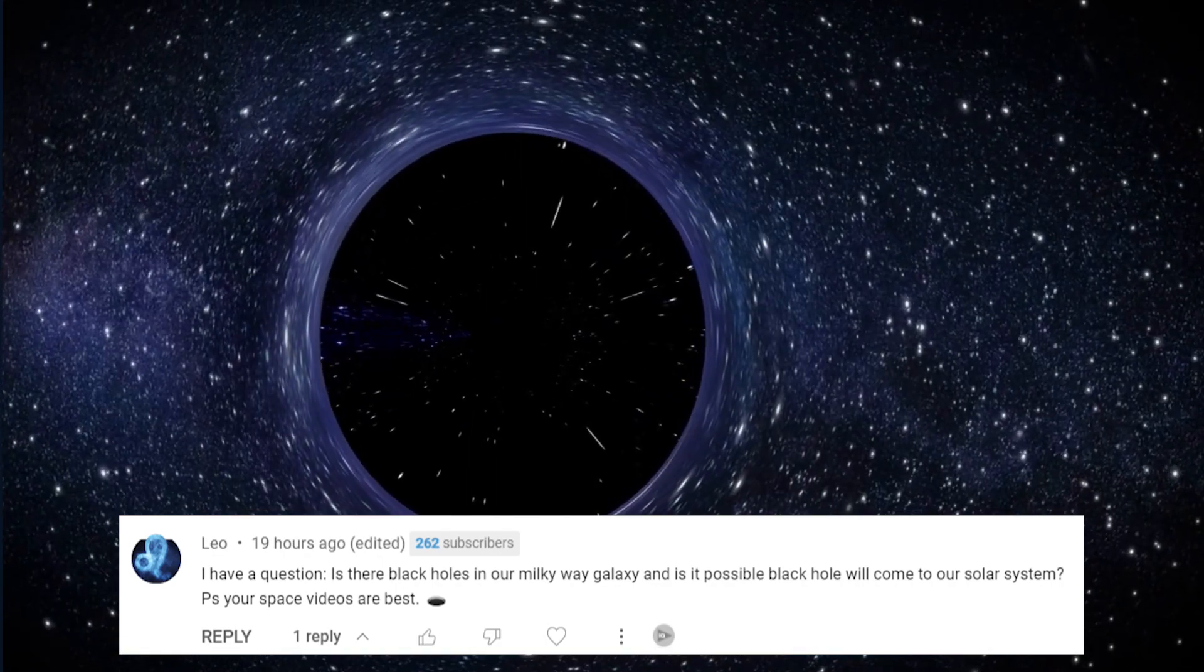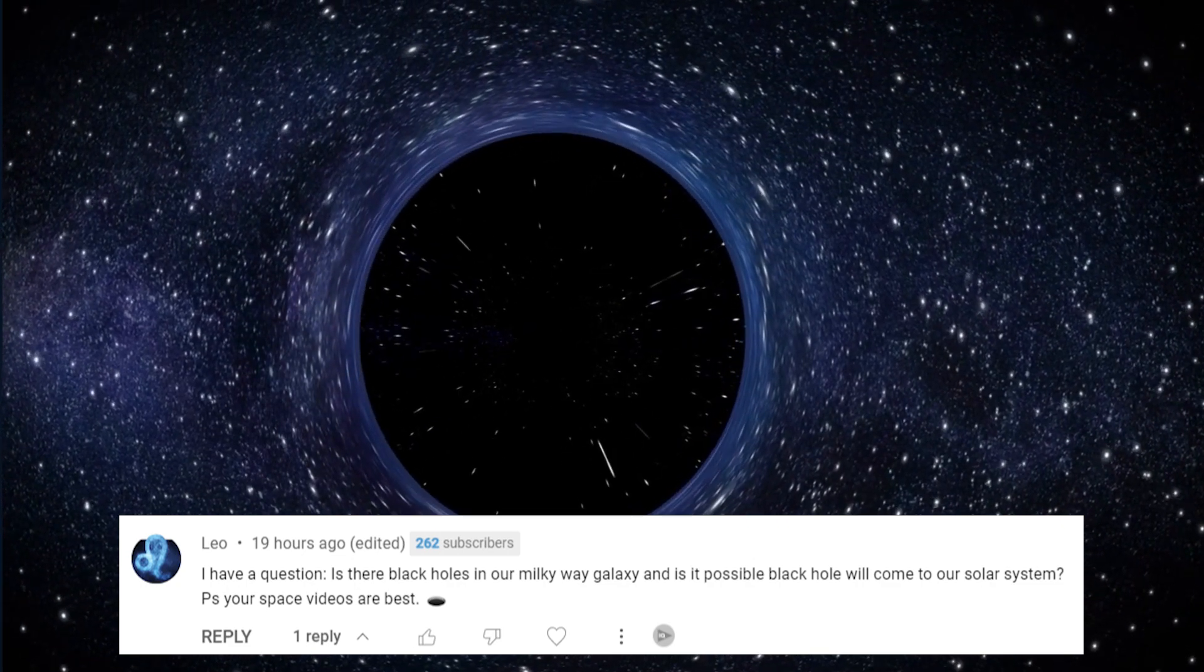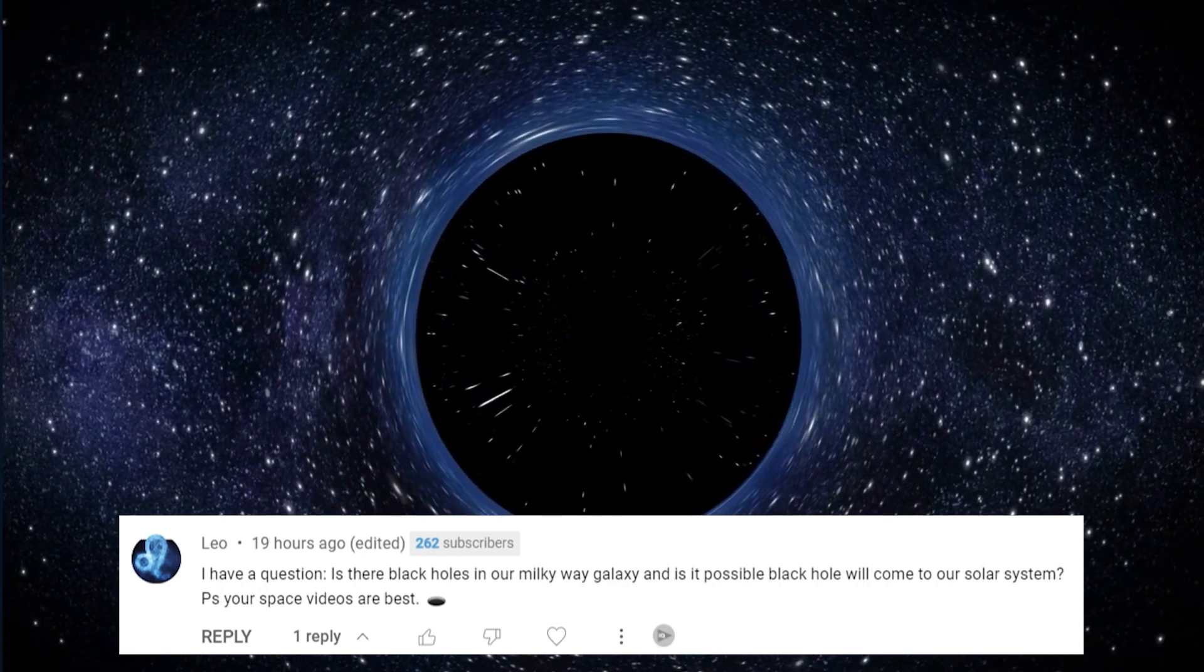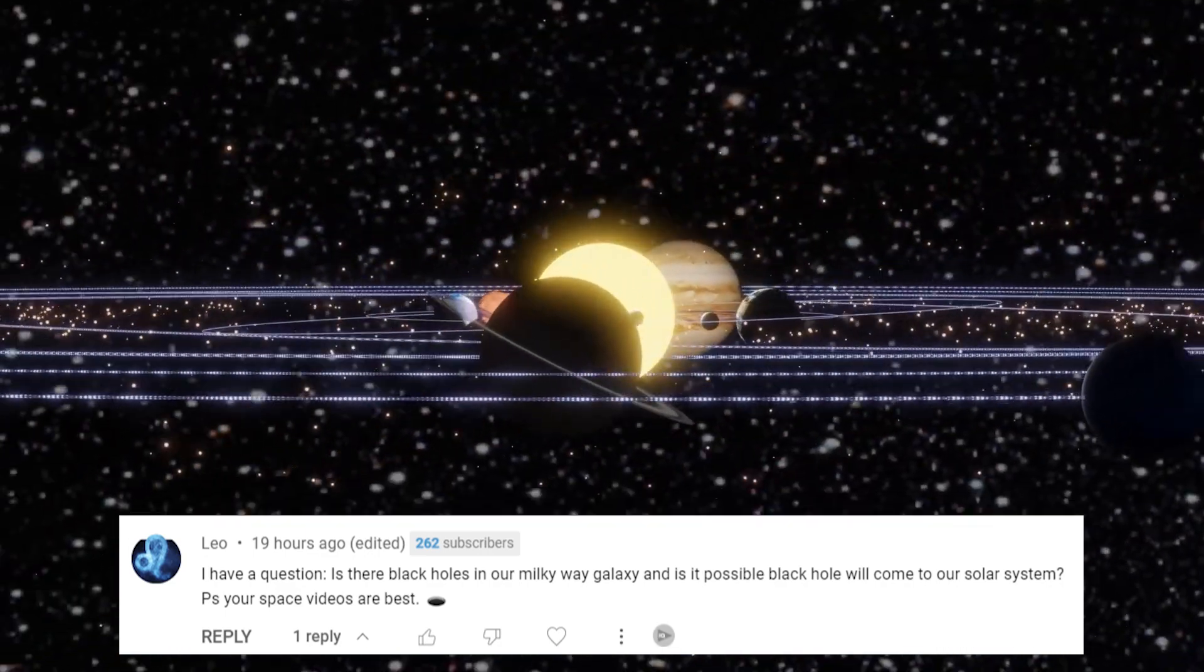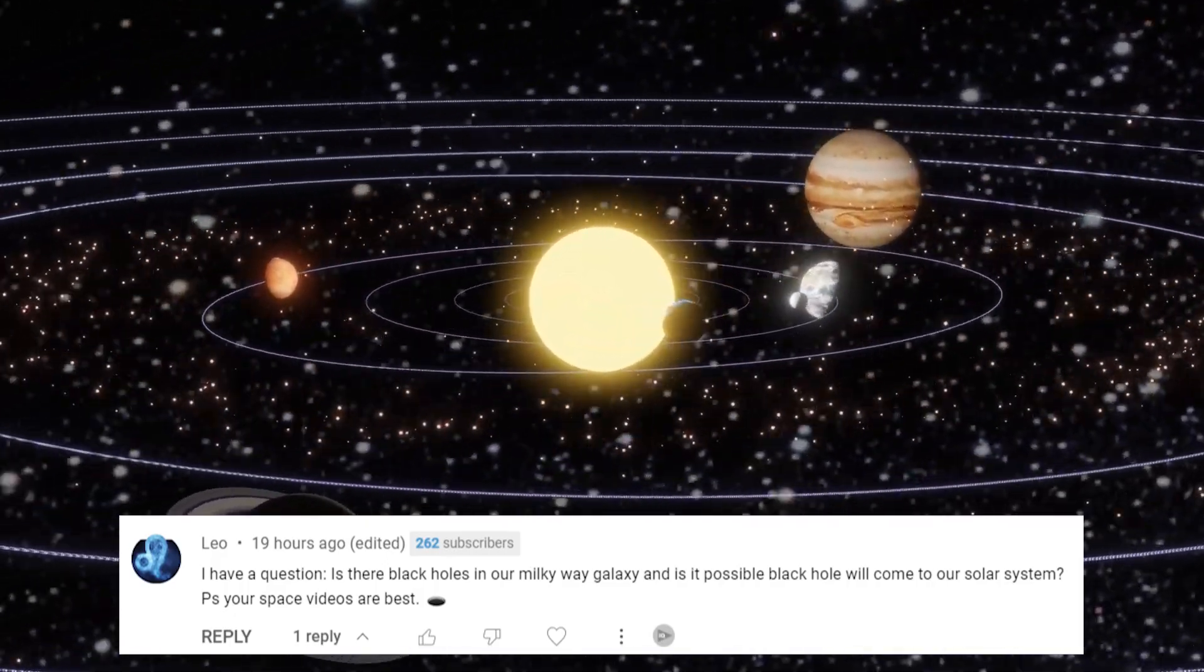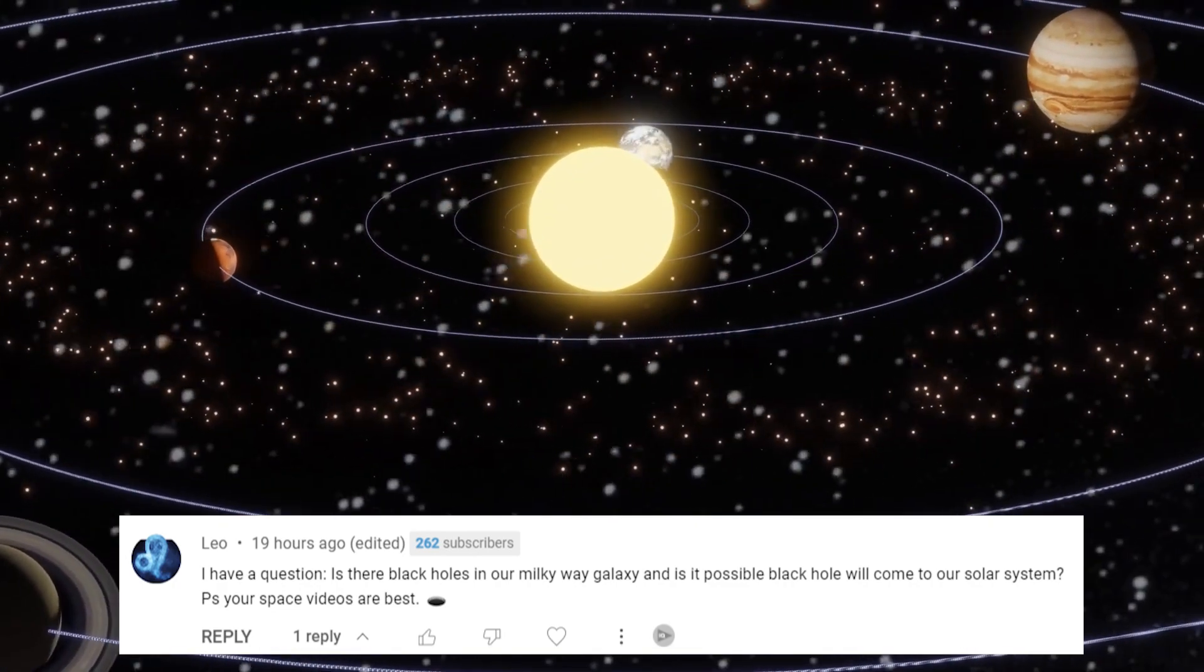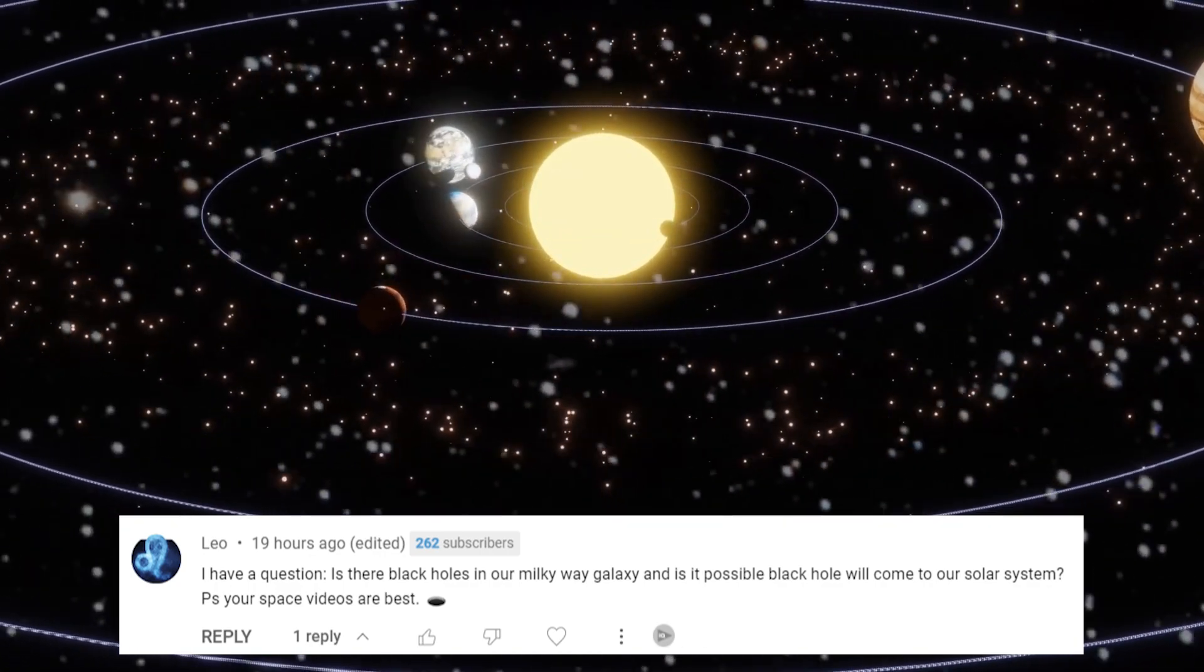However, most of these black holes are not visible because they do not emit any light. Instead, astronomers can detect their presence through their gravitational effects on nearby stars and gas. As for the second part of your question, it's highly unlikely that a black hole will come to our solar system. Even if a black hole were to pass close to our solar system, the gravitational effects on the planets would be minimal. However, a close encounter with a black hole could have catastrophic effects on the Oort Cloud, a region of icy objects that surrounds our solar system.